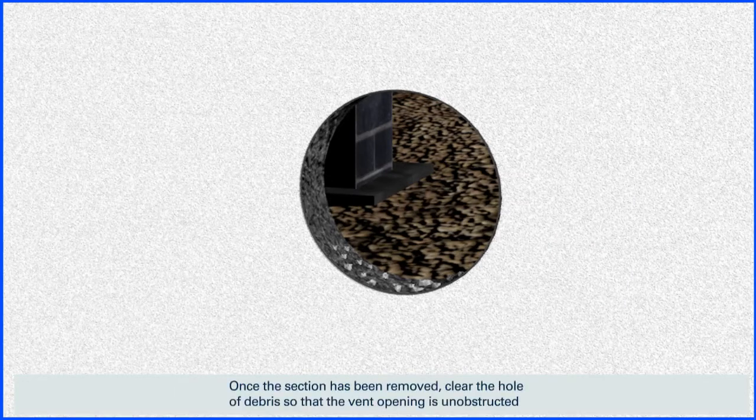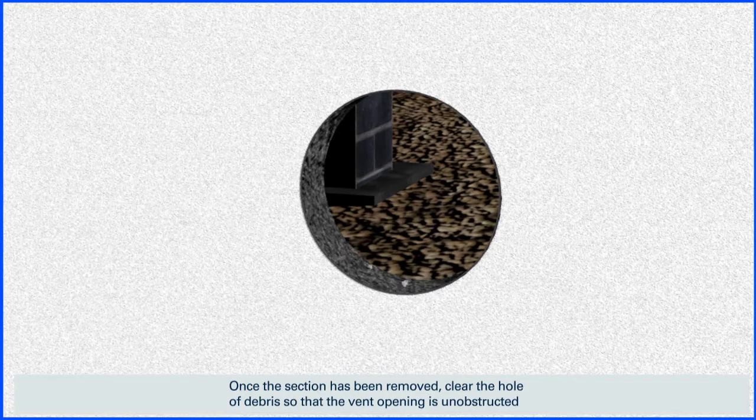Once the section has been removed, clear the hole of debris so that the vent opening is unobstructed.